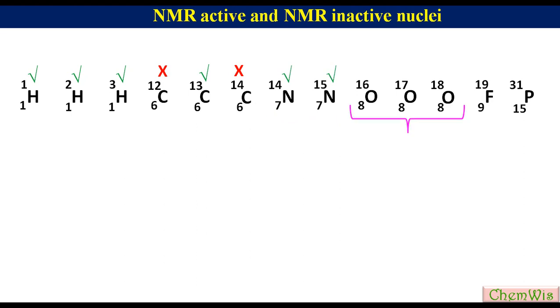Oxygen isotopes. Here value of Z is even, so we need to look at value of A. Oxygen-16 with even Z and even A will be NMR inactive. Oxygen-17 with odd A will be NMR active. Oxygen-18 with even Z and even A will be NMR inactive.